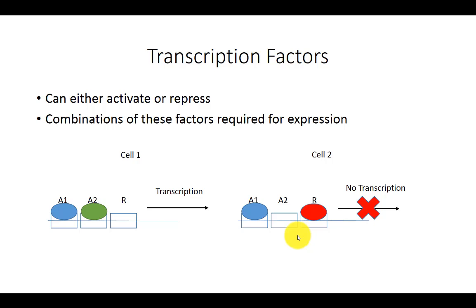Theoretically there could be a cell three that only has activator one, and no activator two, no repressor, and in this cell you get low levels of transcription, and low levels of expression, and this could theoretically give a third phenotype.